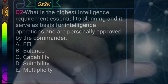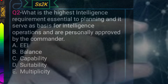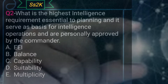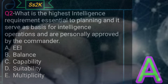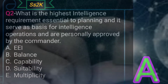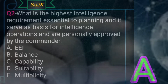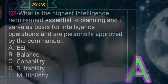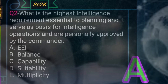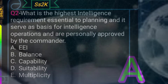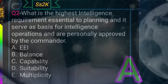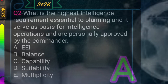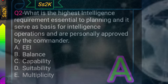The choices are: letter A — balance; letter B — capability; letter C — suitability; letter D — multiplicity. The highest intelligence requirement that should be collected is what we call EEI, or essential elements of information, because that is what is needed for planning and decision-making. For example, before conducting a raid, the information needed to plan how to conduct that raid is called EEI or essential elements of information.